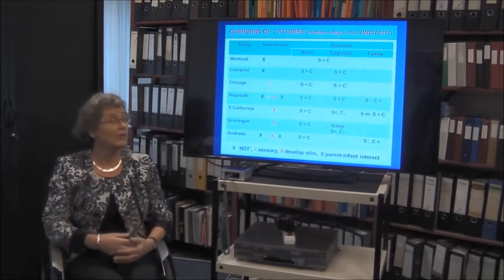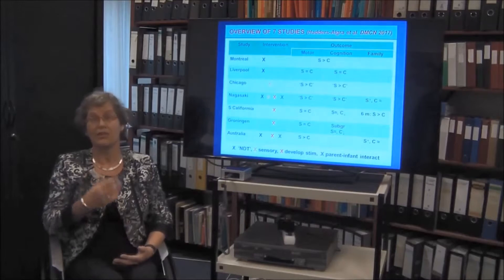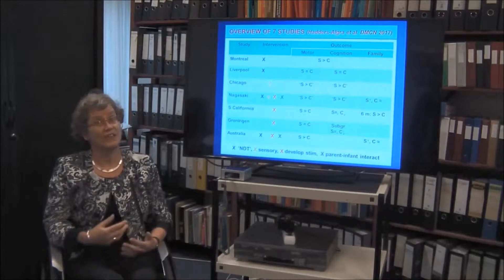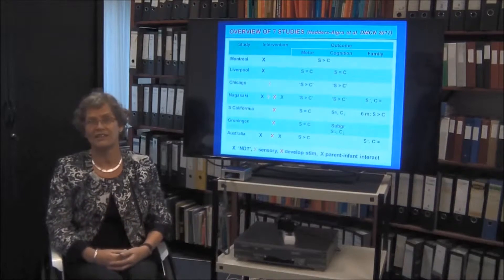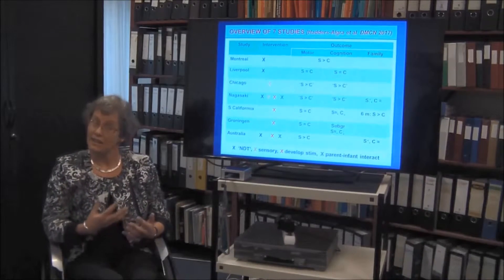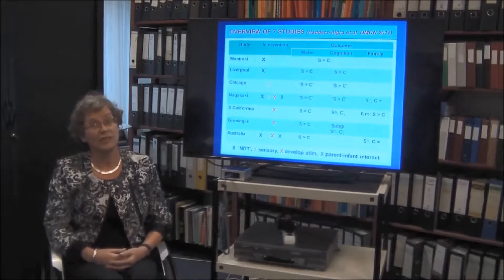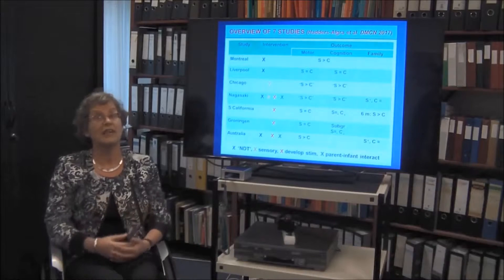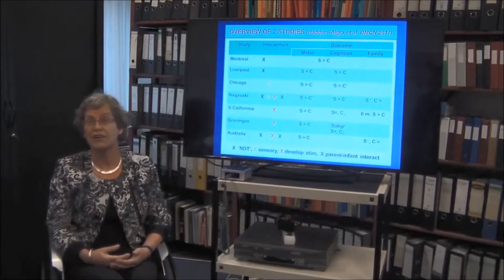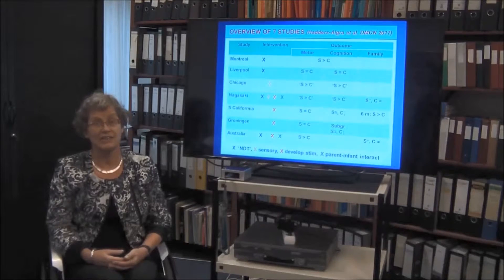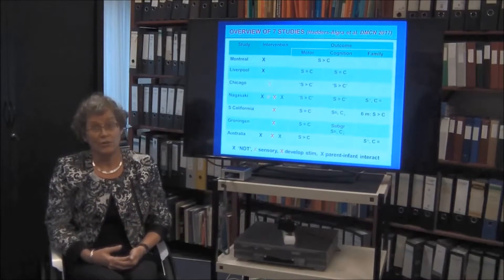So what is new about our study? Two things. First, we addressed the effect of early intervention in very high-risk infants. That is, infants who presented with a brain lesion on neonatal imaging or with definitely abnormal general movements between the age of two and a half and five months corrected age, and we focused on early intervention.